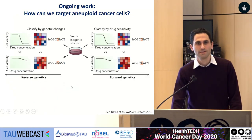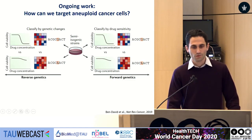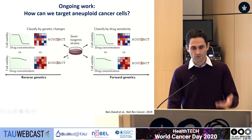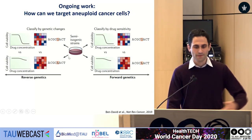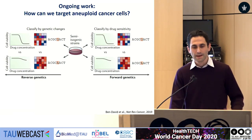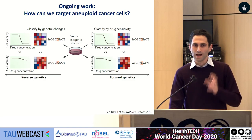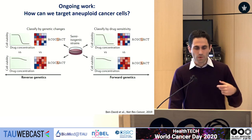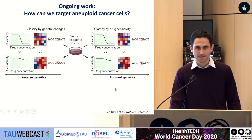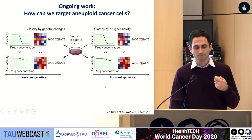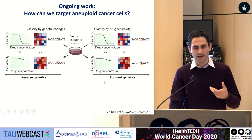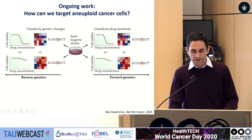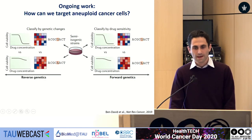Finally, we're trying to target aneuploid cancer cells in order to selectively kill cancer. The idea is that naturally occurring systems and various genetically engineered systems can provide us genetically matched cells with specific aneuploidies that we can compare by reverse or forward genetics, to understand what these aneuploidies actually do in the relevant context and how we can take advantage of them to kill cancer.